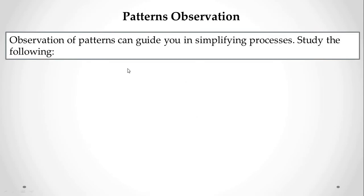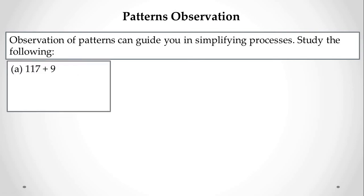Pattern observation can guide you in simplifying calculations. For example, suppose you have 117 + 9. Write 9 as 10 minus 1. So you add 10 to 117 to get 127, then subtract 1 to get 126. This makes the calculation easier.